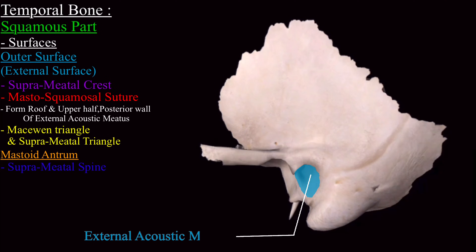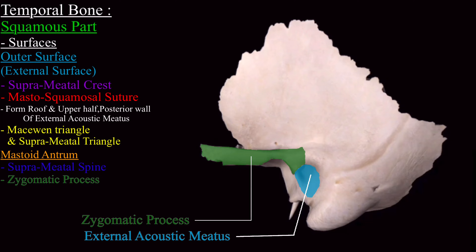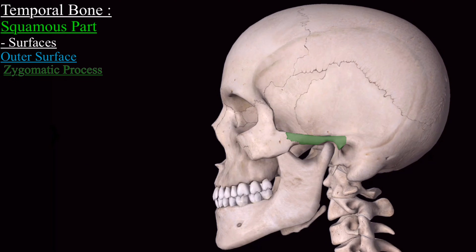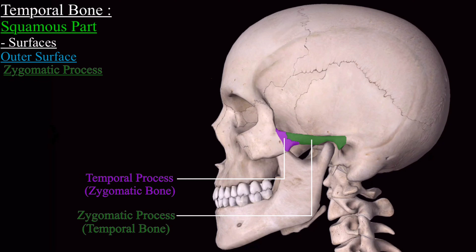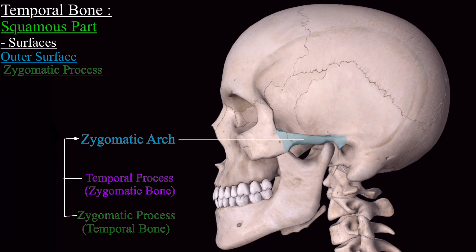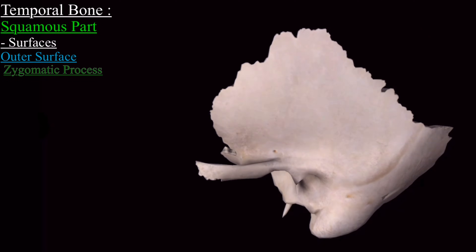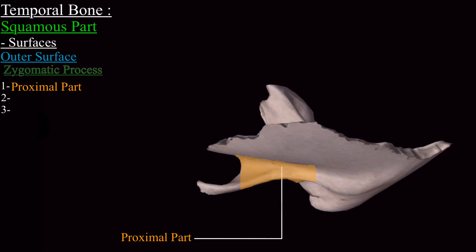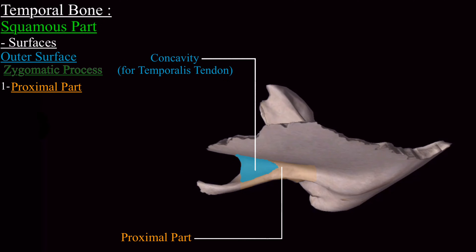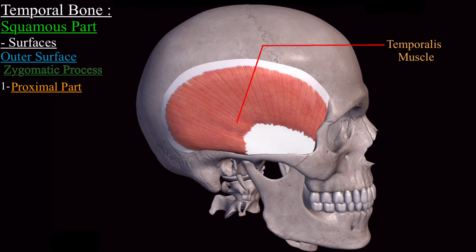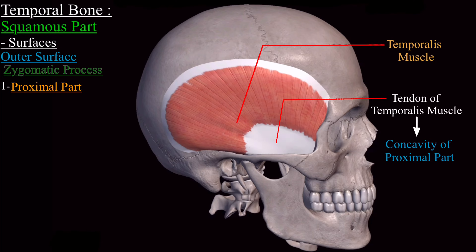In front of the external acoustic meatus, the squamous part forms a process called the zygomatic process. The zygomatic process of the temporal bone is attached to the temporal process of the zygomatic bone, and together they complete the zygomatic arch. The zygomatic process is divided into three parts: the proximal part, the middle part, and the distal part. The proximal part shows a concavity on the upper surface in which lies the tendon of the temporalis muscle.